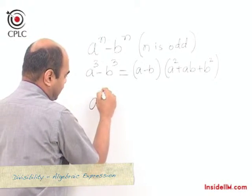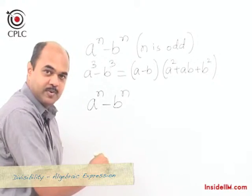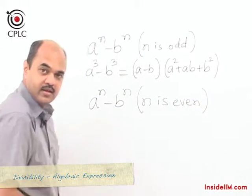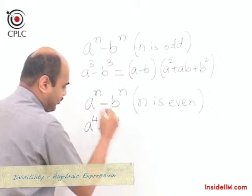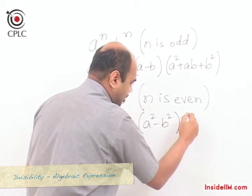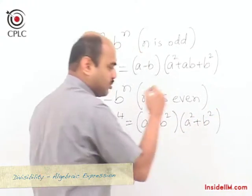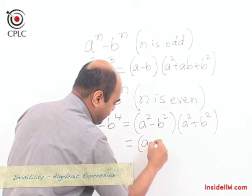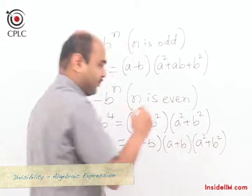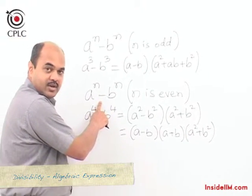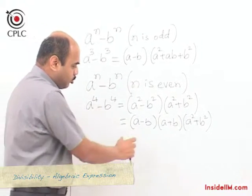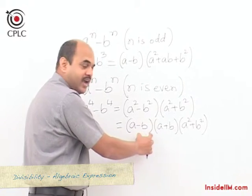Now consider the same expression aⁿ − bⁿ where n is even. Taking the example a⁴ − b⁴, this simplifies as (a² − b²)(a² + b²) = (a − b)(a + b)(a² + b²). So when n is even, aⁿ − bⁿ is divisible by both (a − b) and (a + b).